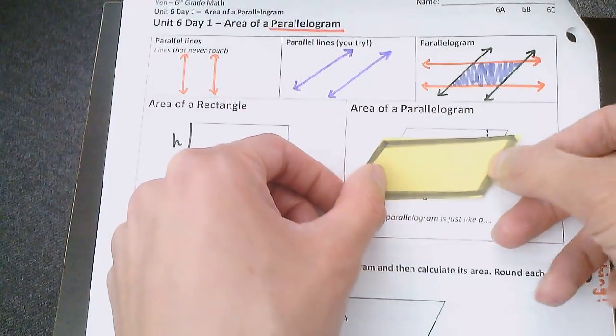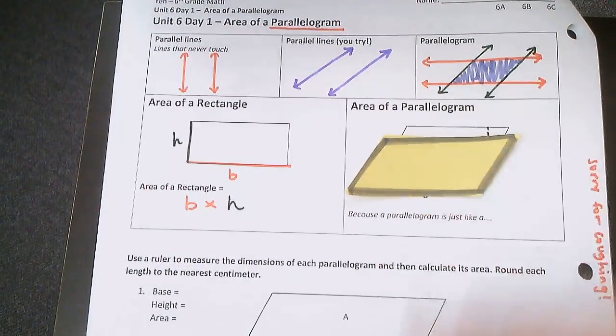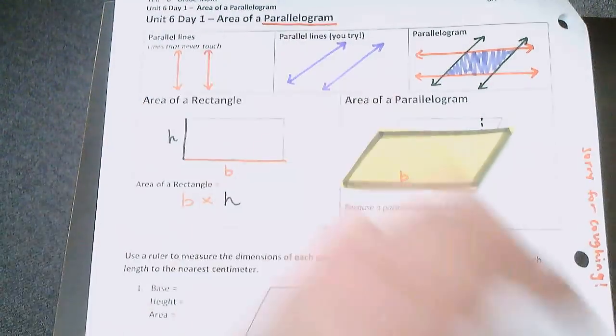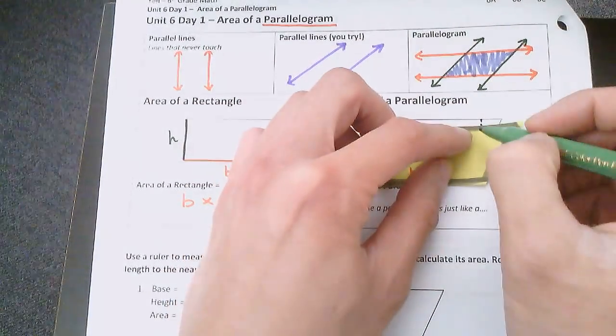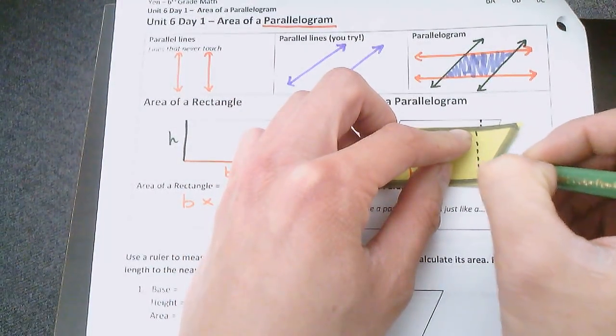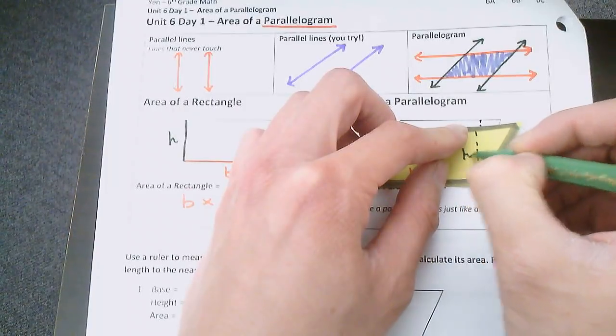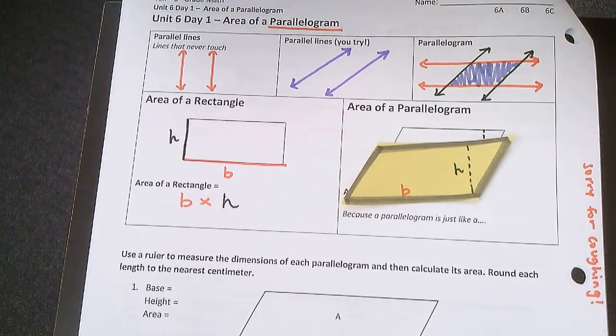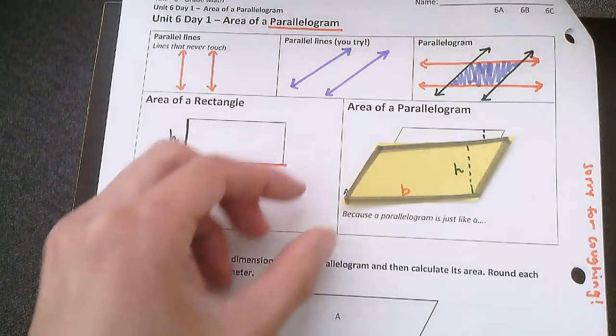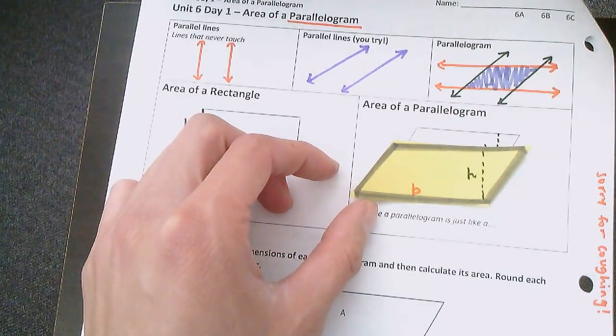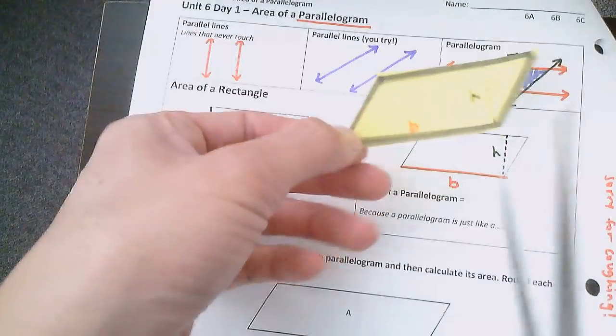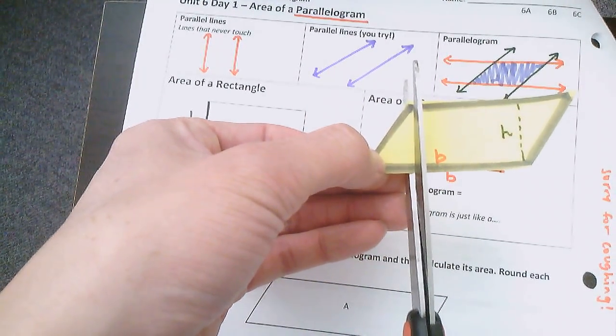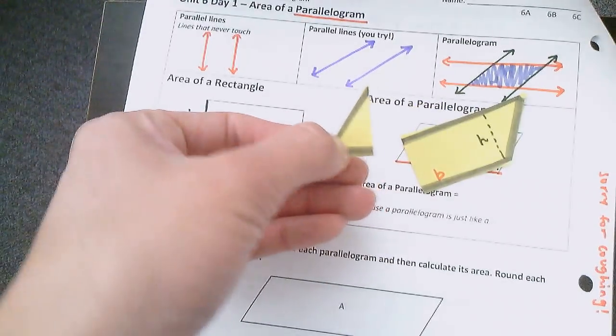Now let's take a look at this yellow parallelogram that I have here. This bottom part is the base. The height is the line that goes straight from the top to the bottom. Now what I'm going to do is, I'm going to cut off this part of the parallelogram. Just like that.